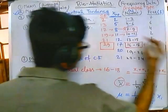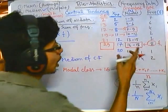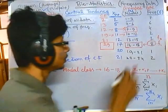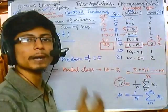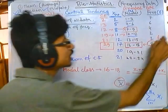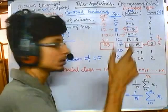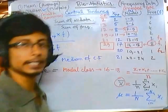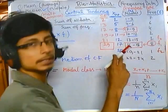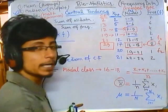The frequency of the modal class is called f1. The frequency of the class just above the modal class in the frequency table is called f0 — here that is the class 13 to 15. So f0 denotes the frequency of the class placed just before the modal class. f2 is the frequency of the class just placed below the modal class, which here is 19 to 21.